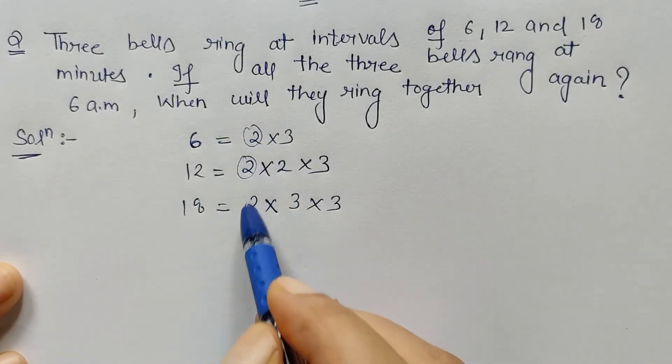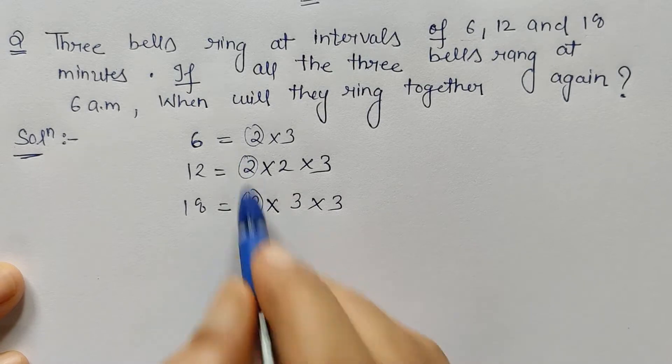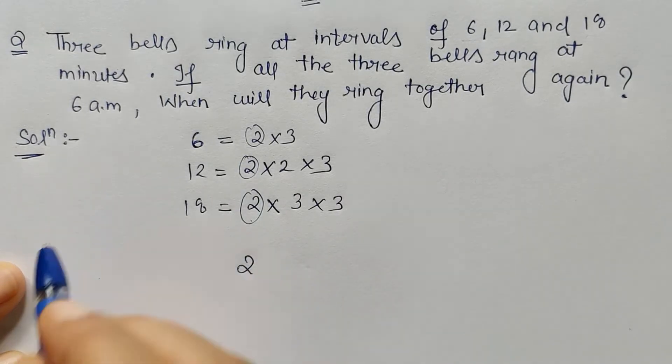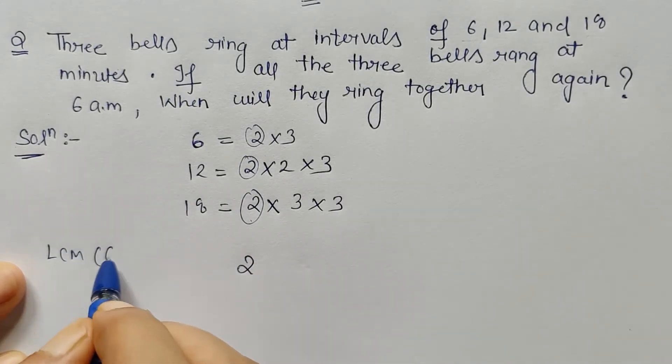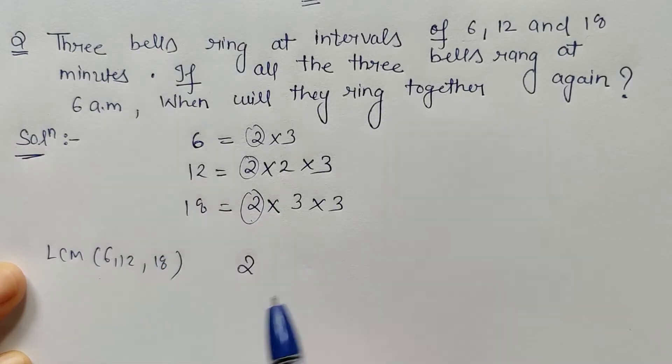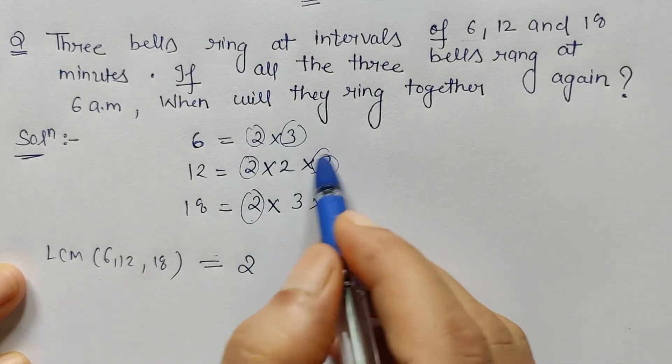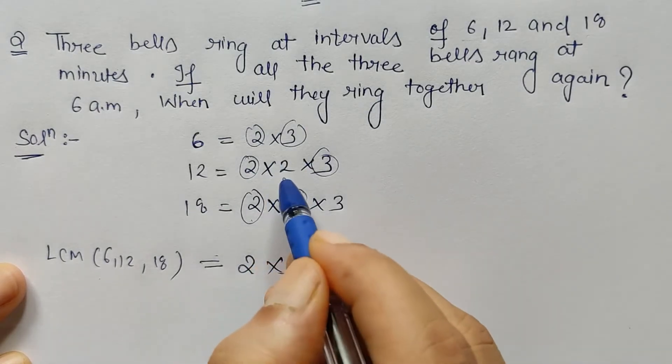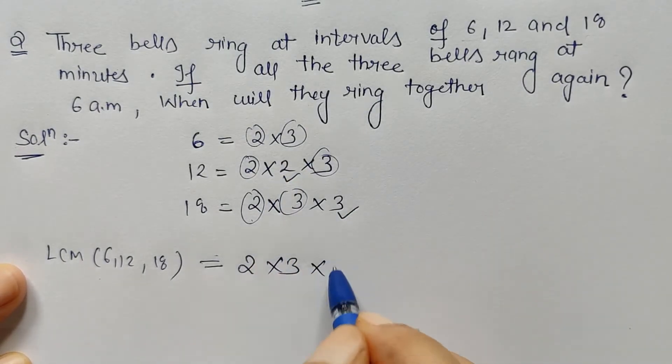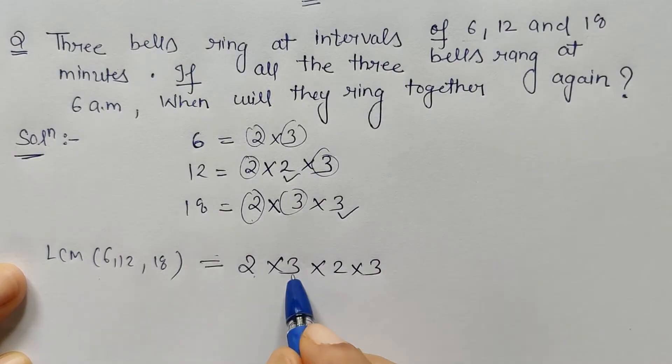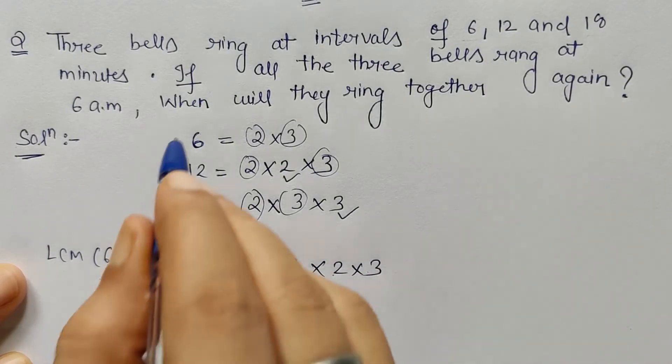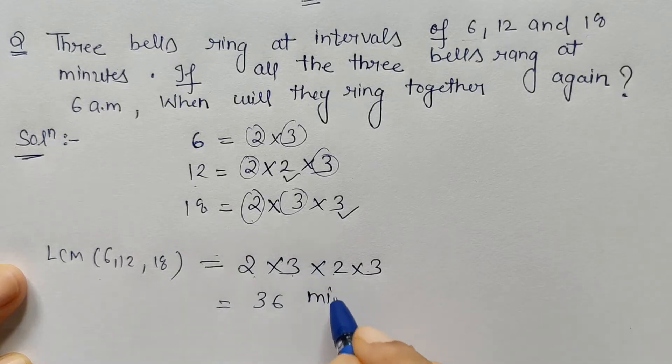All three twos can be written as 2. So LCM of 6, 12, 18 is equal to 2, and then this 3, and things which are left also included. So 2 times 2 are 4, times 3 is 12, times 3 is 36. So this is nothing but minutes, right? So after 36 minutes...